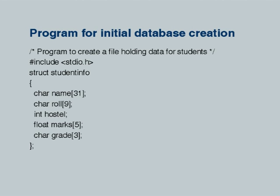This program creates a file holding data for students. We define 'struct student_info'. Notice that we are using a structure — this does not declare any variable or array. It declares that there is a structure type called student_info, and any variable of this type will have those elements: char name, char role, int hostel, float marks, char grade. This is well understood from our previous discussion.